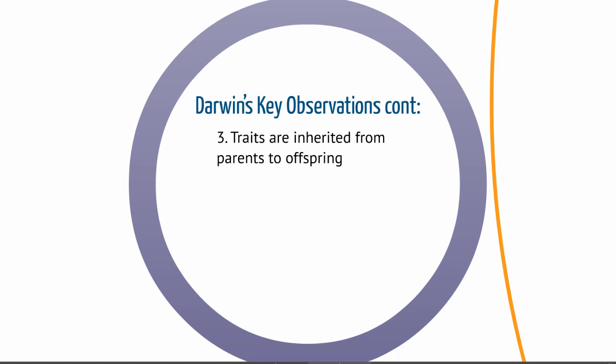Mendel hadn't done any of his work yet. And in The Origin of Species, Darwin actually referred to something called gemmules that might be passed on from parents to offspring.